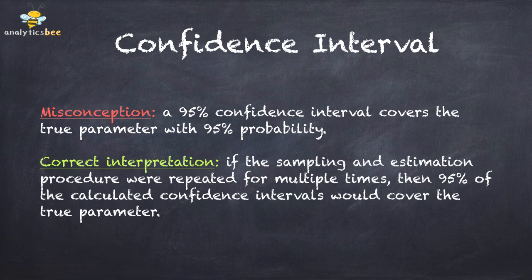The correct interpretation is as follows. If the sampling and estimation procedure were repeated multiple times, 95% of the calculated confidence intervals would cover the true parameter.